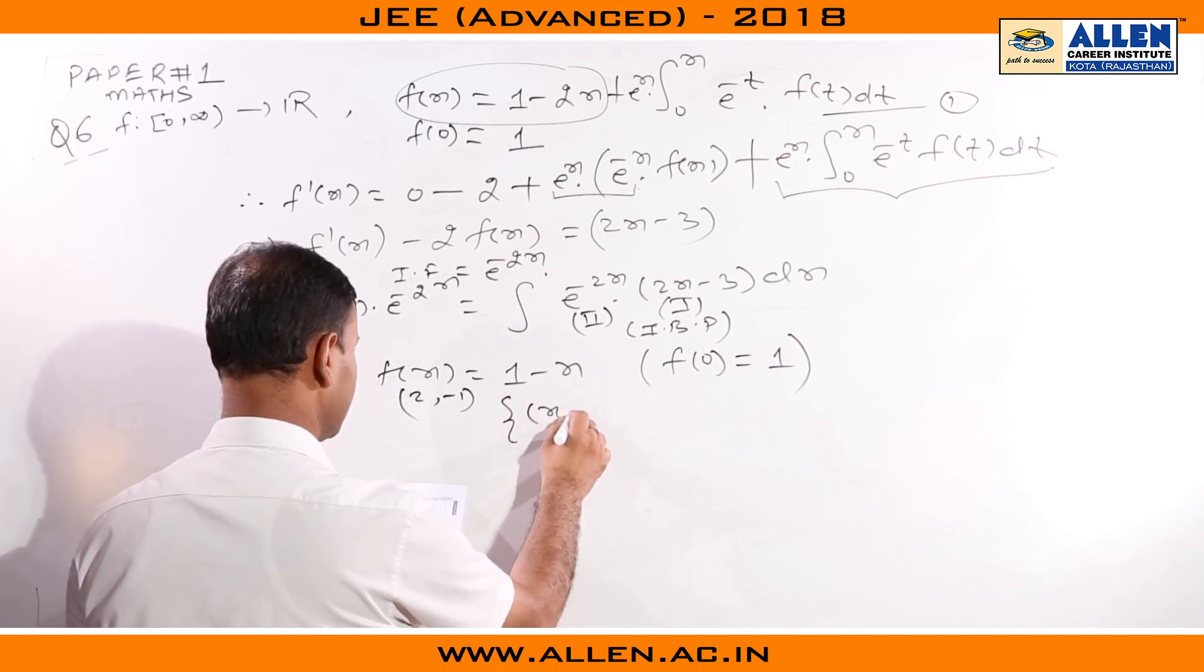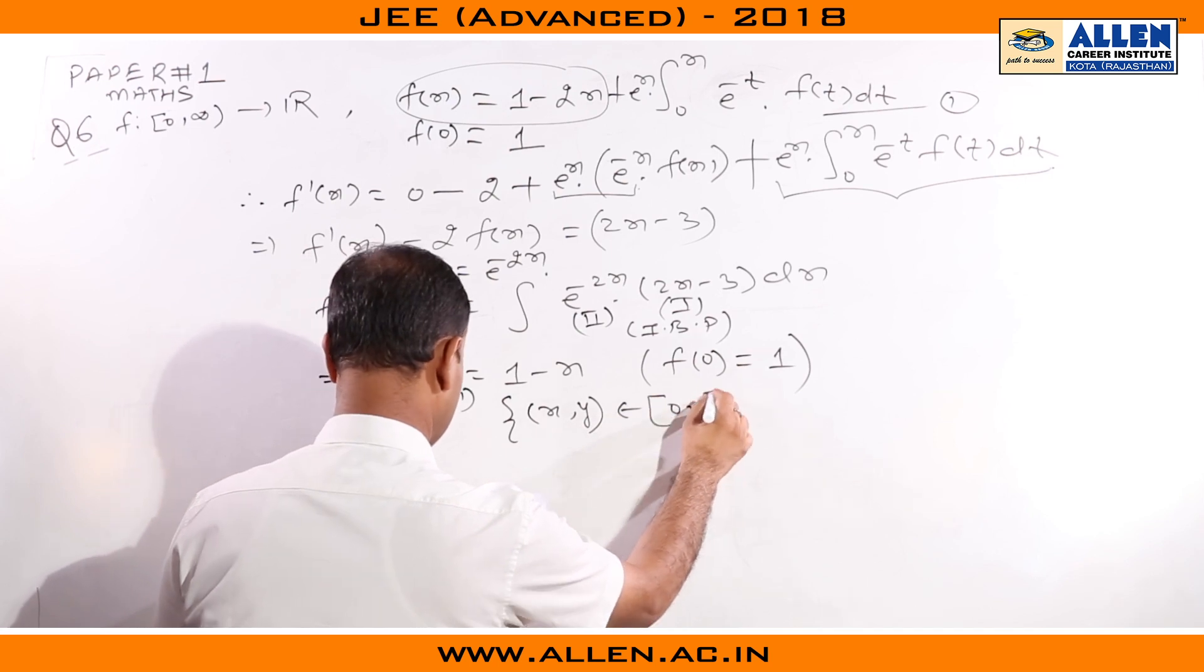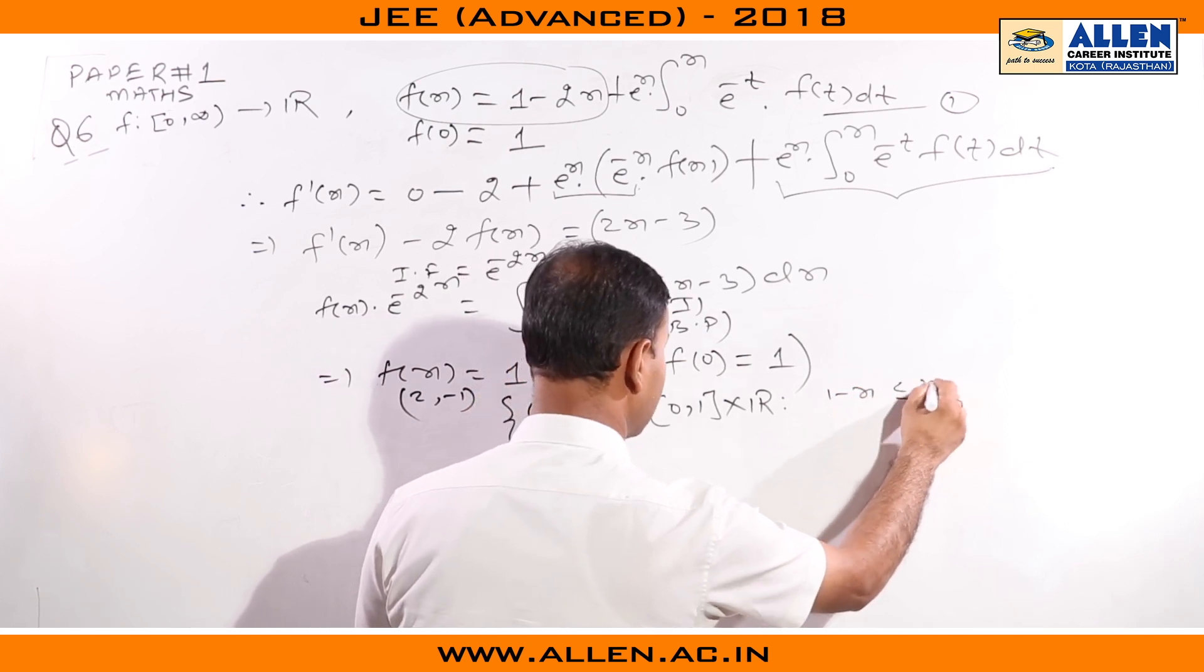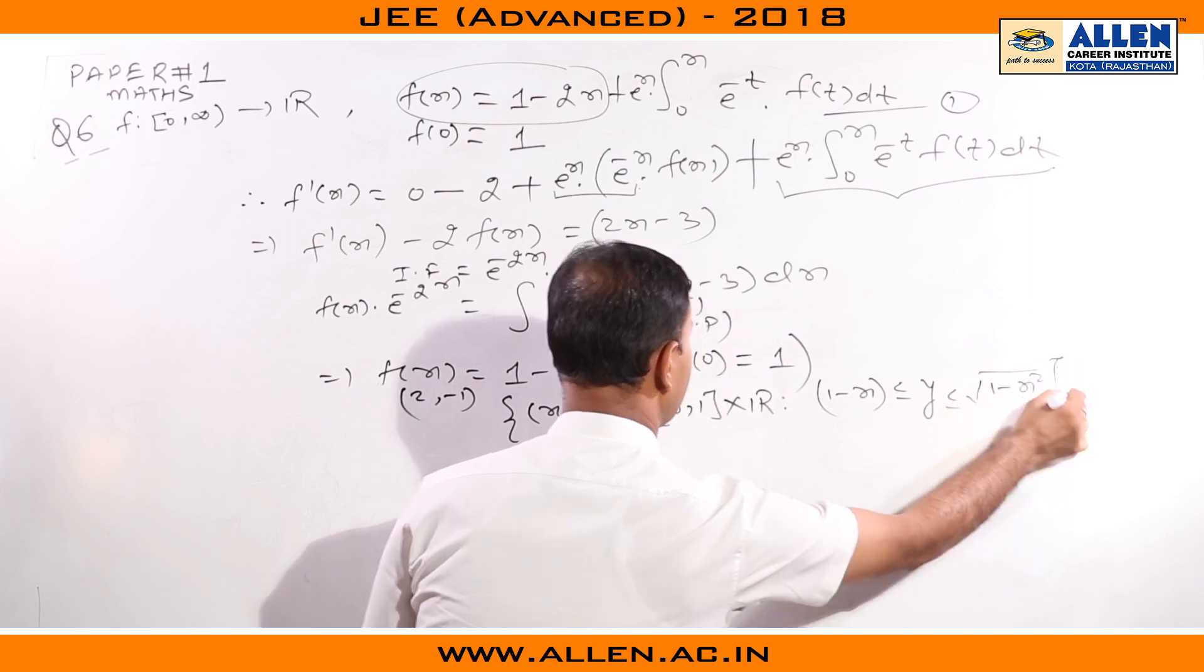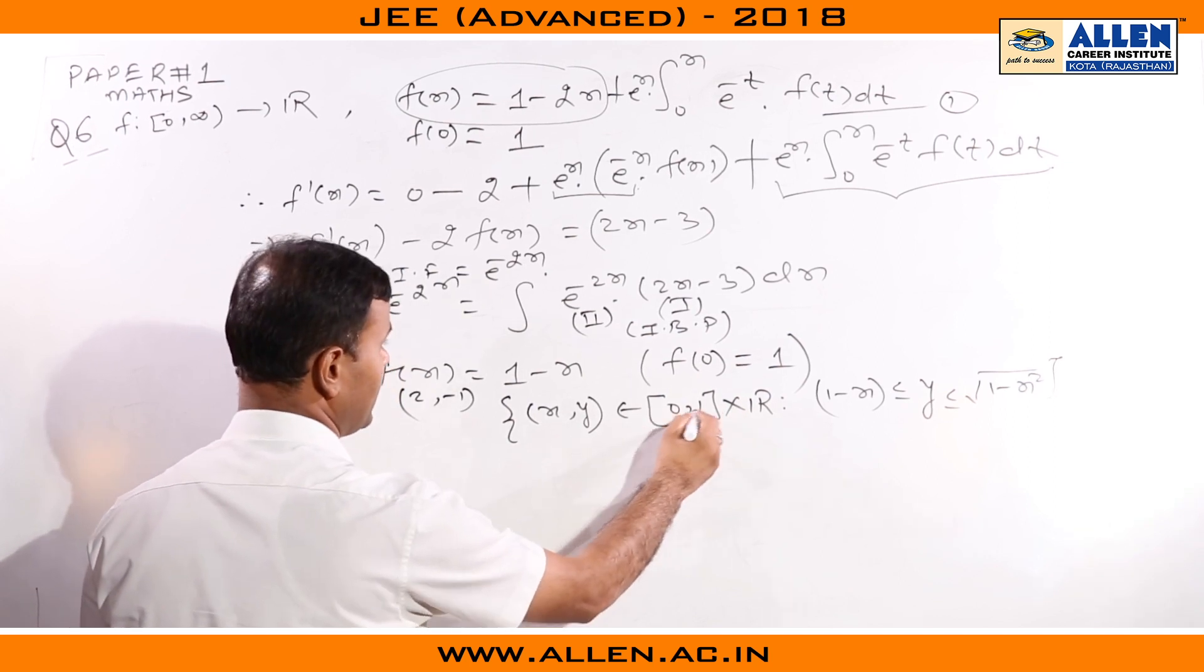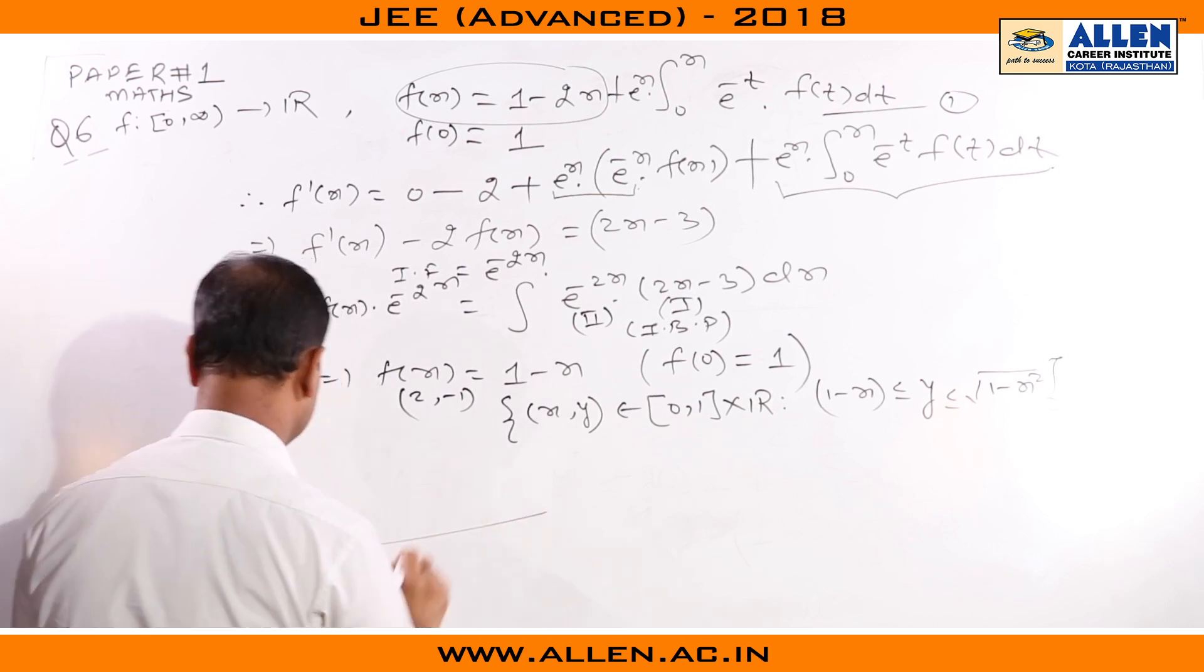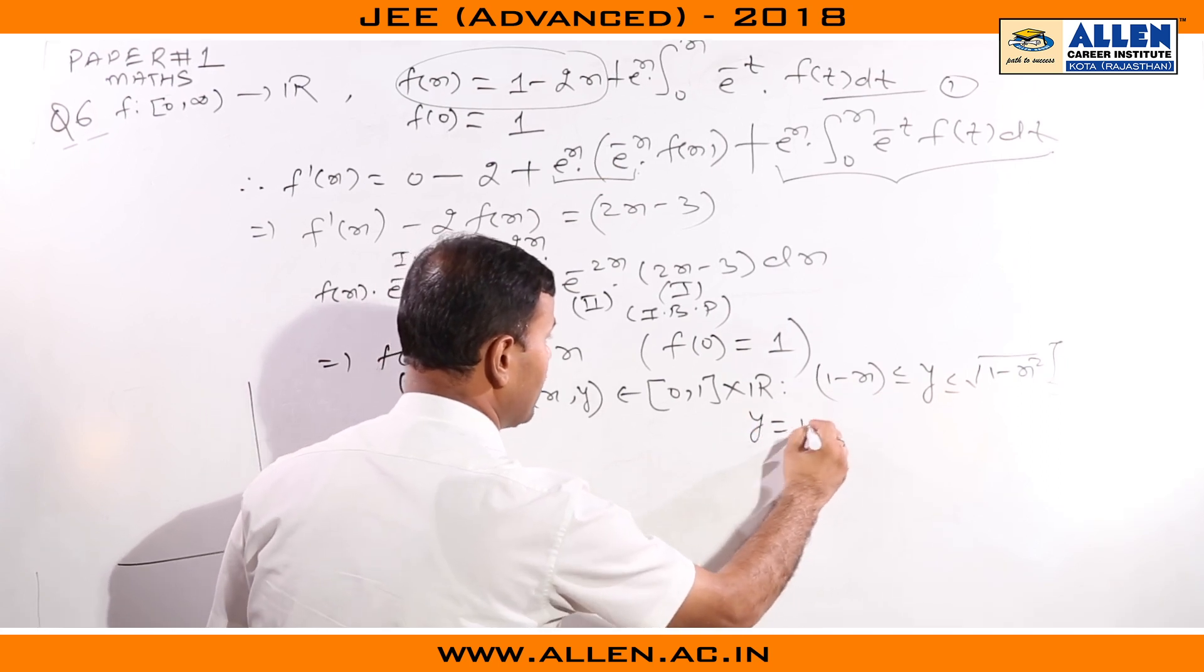For options C and D, we have to find the area of the region consisting of points such that f(x), which is 1 - x, is less than or equal to y, which will be less than or equal to √(1 - x²). For this area, we are given the interval from 0 to 1.